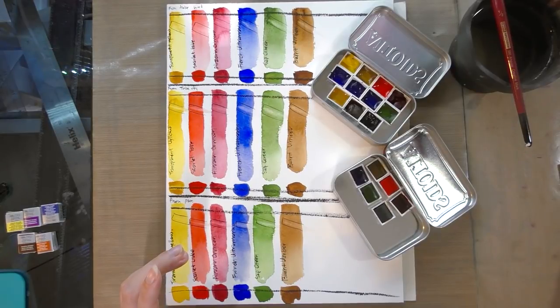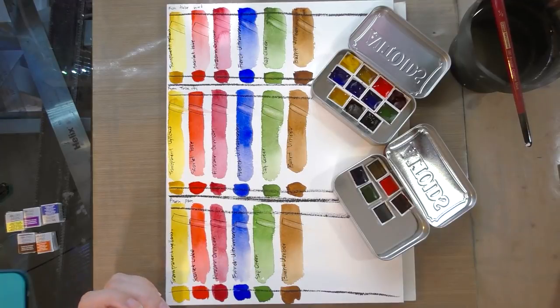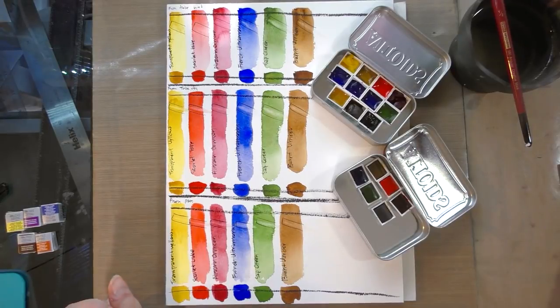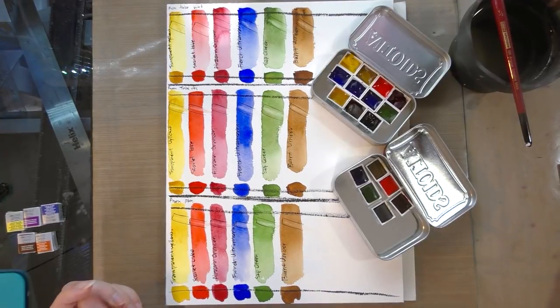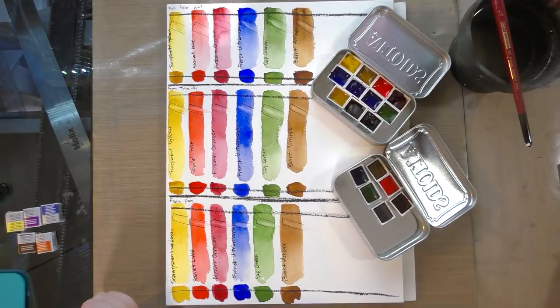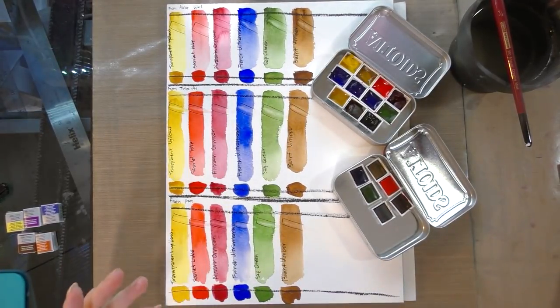Alizarin Crimson is $6.47 for a half pan, $5.81 for a five milliliter tube. French Ultramarine is $7.49 for a half pan, $6.53 for a five milliliter tube. Sap Green is $6.47 for a half pan, $5.81 for a five milliliter tube. And burnt umber is $6.47 for a half pan and $5.81 for a five milliliter tube, almost said a military tube. So all of these prices came from Dick Blick. That's where I purchased the supplies that I reviewed for this video from. So those are prices I'm going to go with.